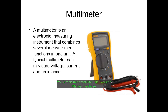A multimeter is an electronics measuring instrument that combines several measurement functions in one unit. A typical multimeter can measure voltage, current and resistance. This is the picture of a multimeter.